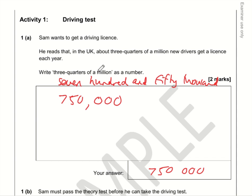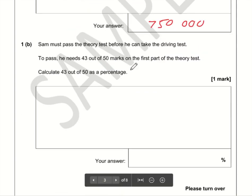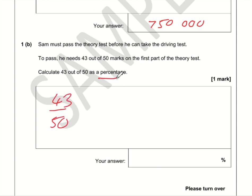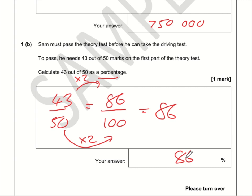Okay, so we want to calculate 43 out of 50 as a percentage. As a fraction it's 43 out of 50. Remember that percent means out of 100, so a percentage is a fraction out of 100. We want an equivalent fraction out of 100. We've doubled the number on the bottom, so therefore we need to double the number on the top, and 43 times by 2 is 86. So that is therefore 86 percent.